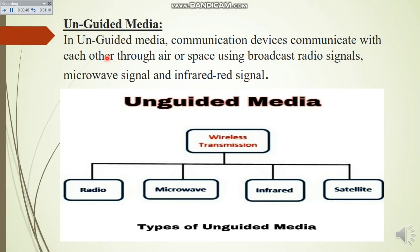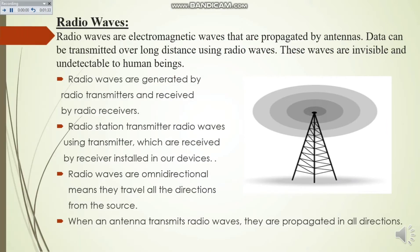In unguided media, communication devices communicate with each other through air or space using broadcast — meaning long-distance radio signals, microwave signals, and infrared signals. The types of unguided media are: radio waves, microwaves, infrared, and satellites. Now let's learn about each one.